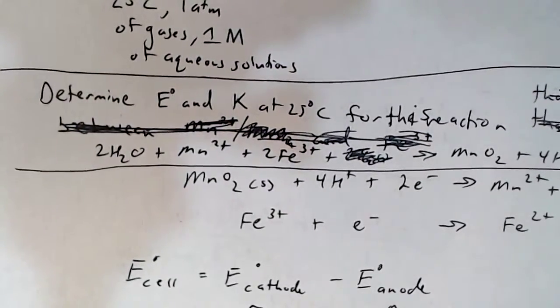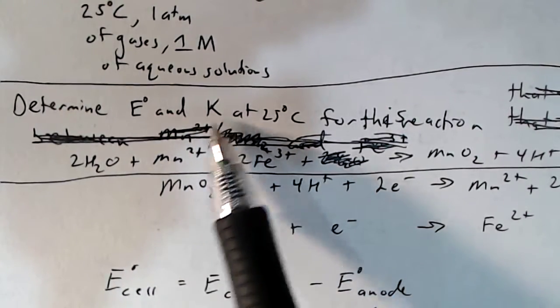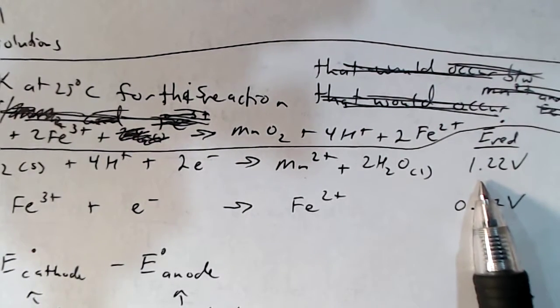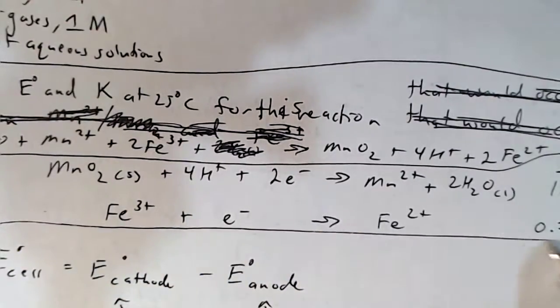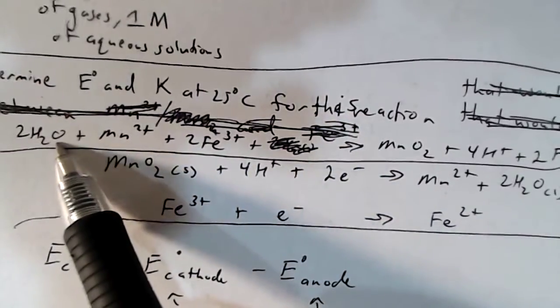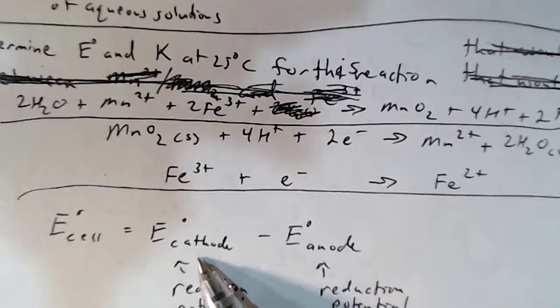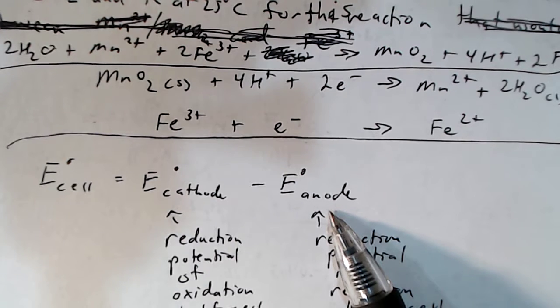Let's go ahead and solve a problem. Determine the voltage for this reaction and the equilibrium constant for this reaction, given that these two half-reactions on the reduction potential chart have these values for their reduction potentials. Basically, what's on the reduction potential chart is given, and we're interested in the E and K for this reaction.